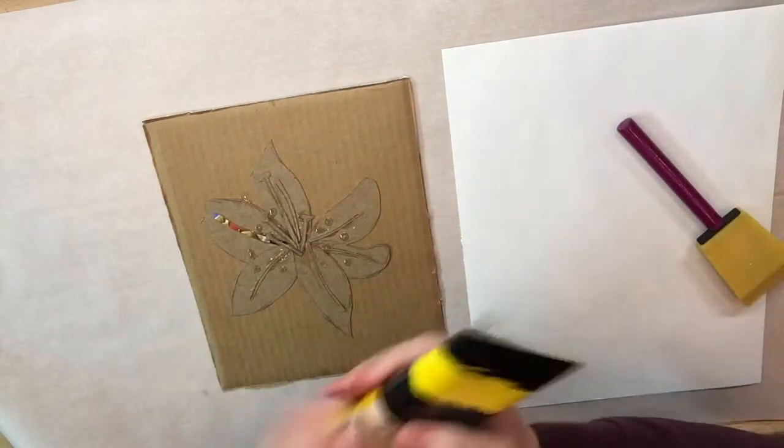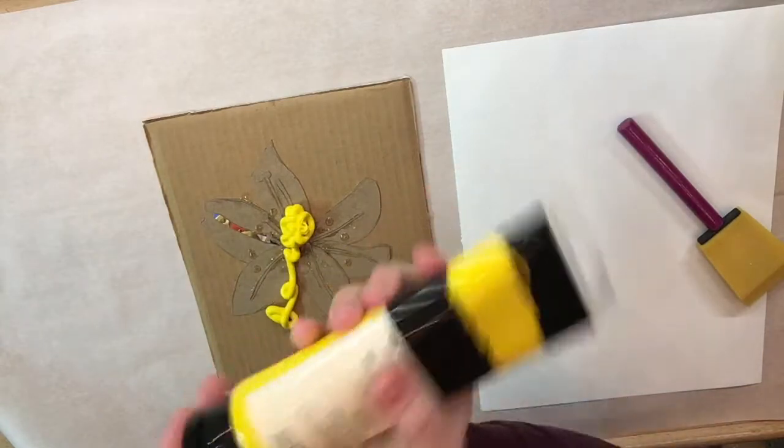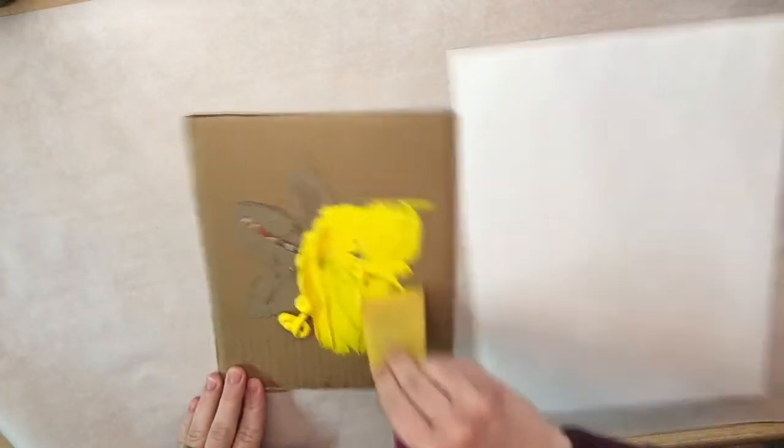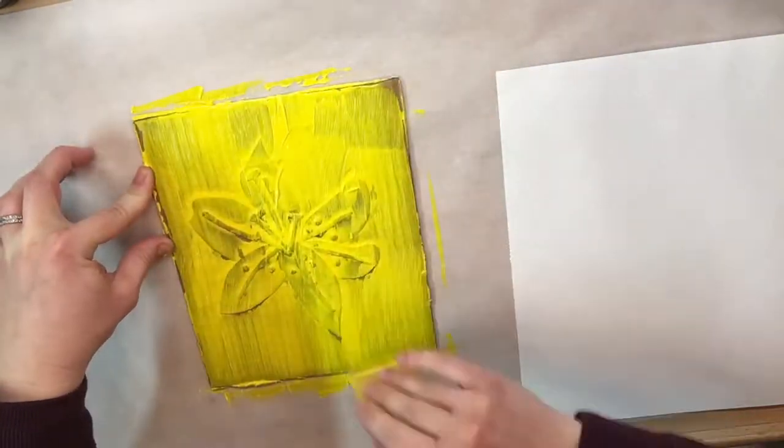So first we're going to put paint onto the printing plate. So I just squeeze some paint on there. Quickly move that around and cover the whole surface or at least where you want it to print.